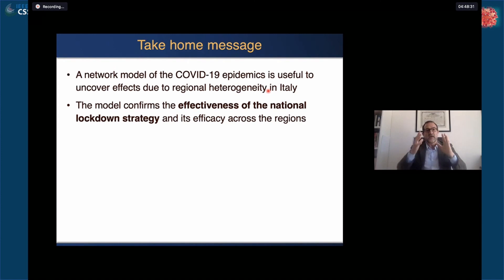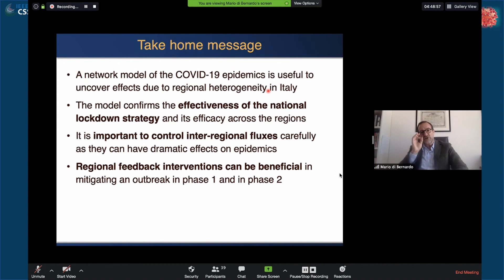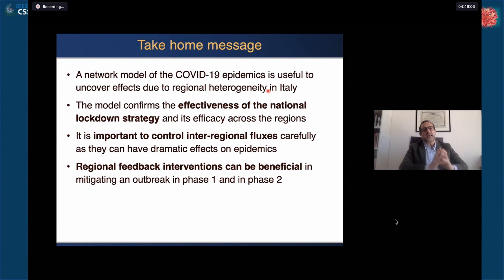As many of you and many of us found in their homemade models, we found that the lockdown strategy was essential, it's effective, and whoever doubts its effectiveness goes against all of these model predictions. We also saw that it's very important to carefully control the regional fluxes because they can have dramatic effects because of these local versus global effects.